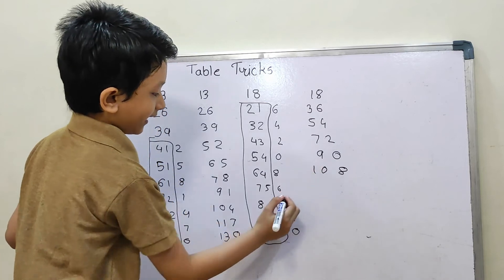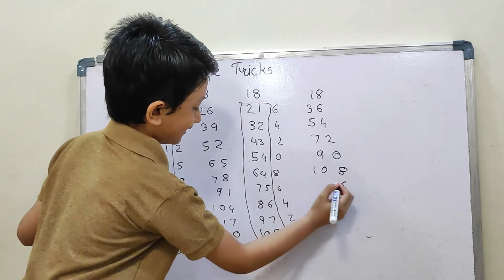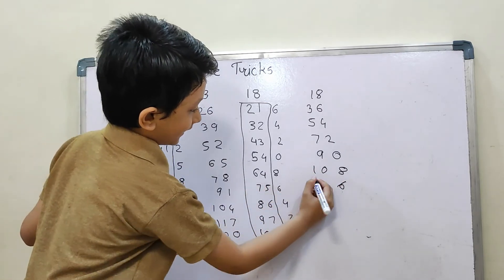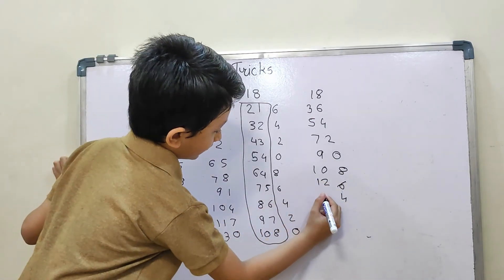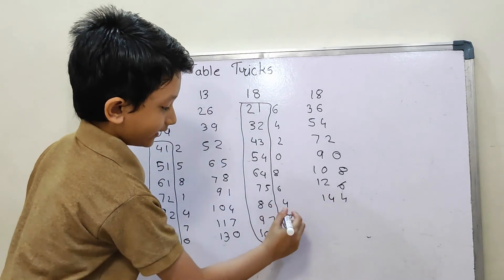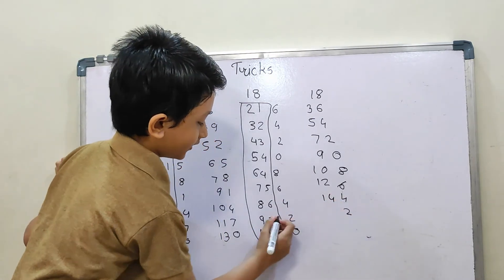And then we have 6 as it is, 7 plus 5 equals 12. And then we have 4 as it is, 8 plus 6 equals 14. And then we have 2 as it is.